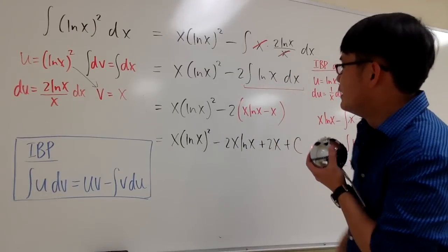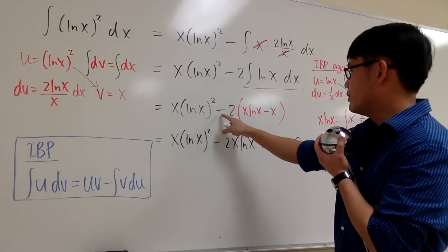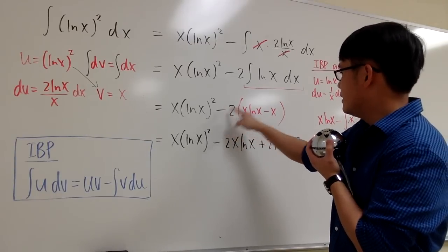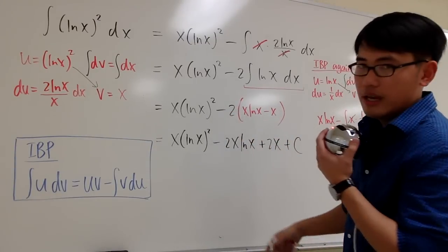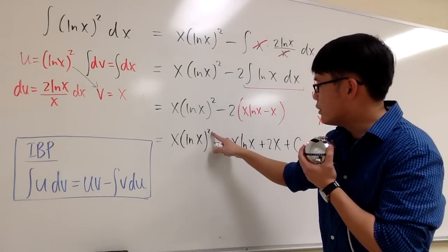And we are done. Because there's no more integration that we have to do. The last thing that we have to do is look at the negative 2 and distribute the negative 2 inside. And finally, the answer is x times (ln x)²